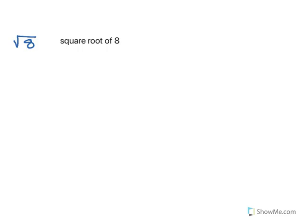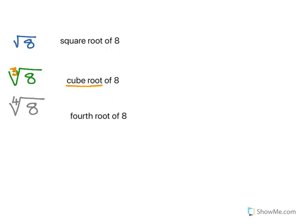We read this as square root of 8. We read this number as cube root of 8 — there is a 3, hence it is cube root of 8. The next number is read as fourth root of 8 — this is 4, hence fourth root of 8.